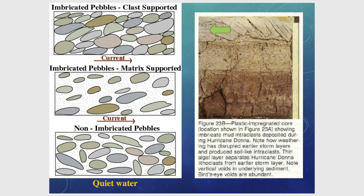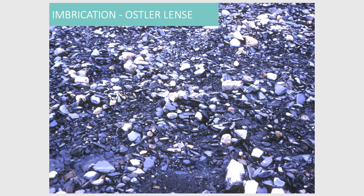Ostler lenses are another example of imbrication surfaces, commonly found where isolated lenses form as bars develop in a river system. The accumulation on sand bars and gravelly bars forms characteristic imbrication patterns, resulting in ostler lenses.